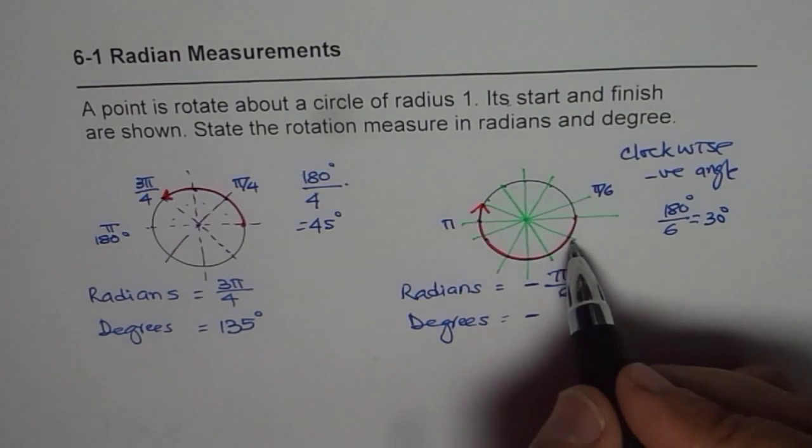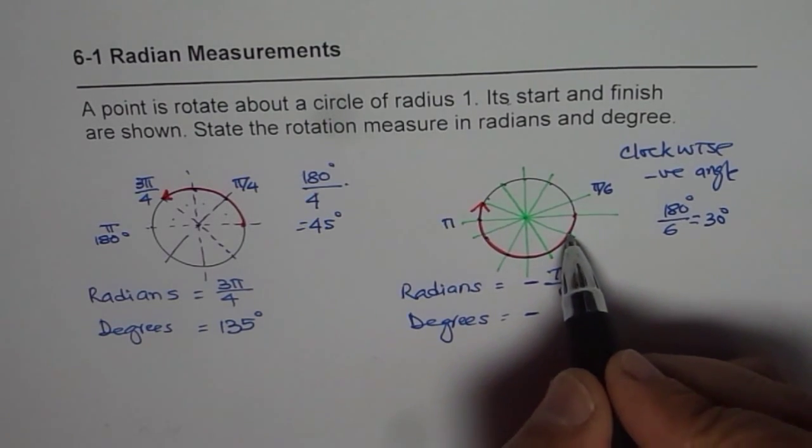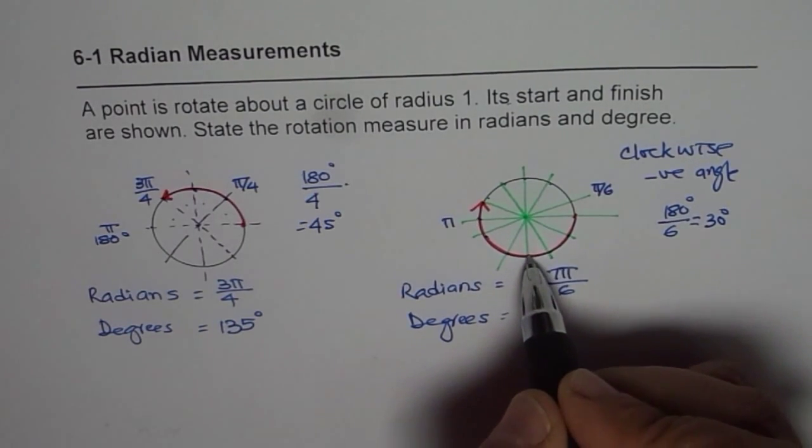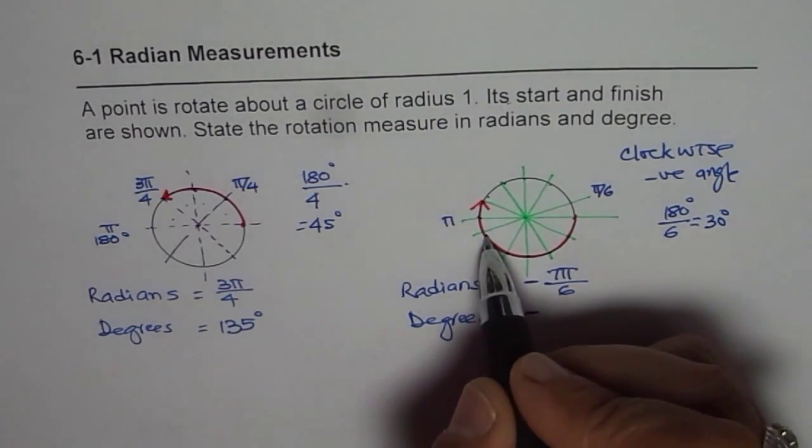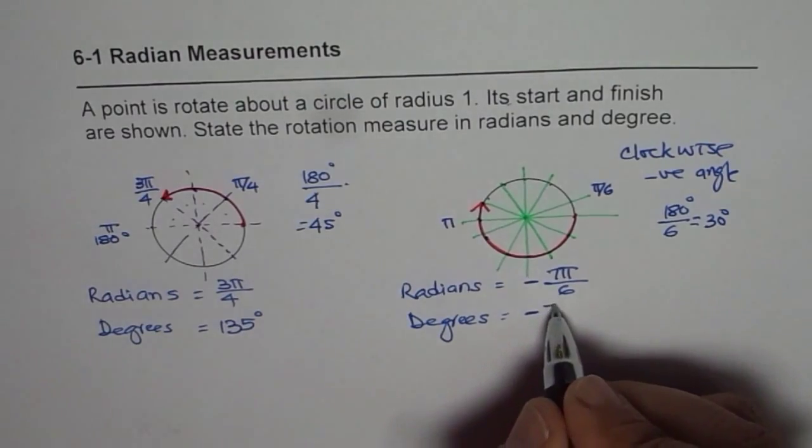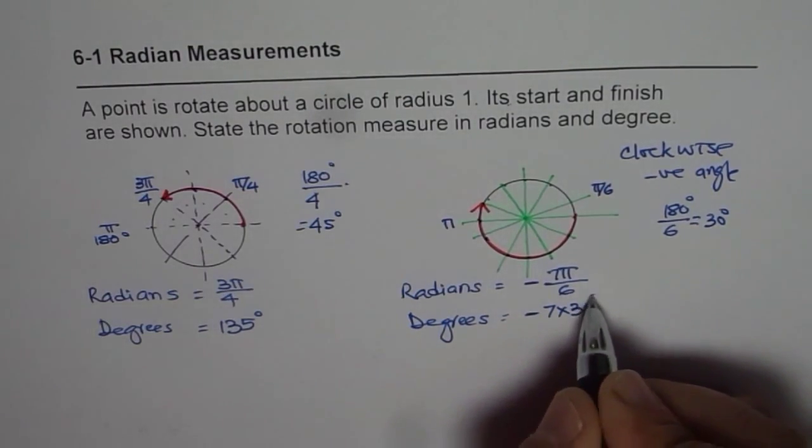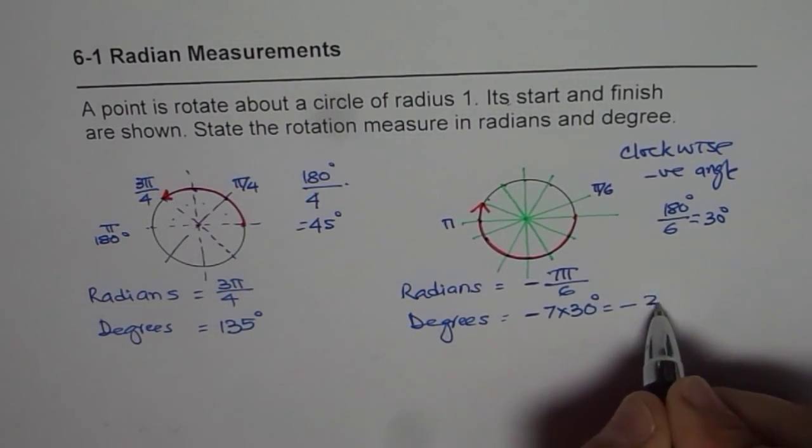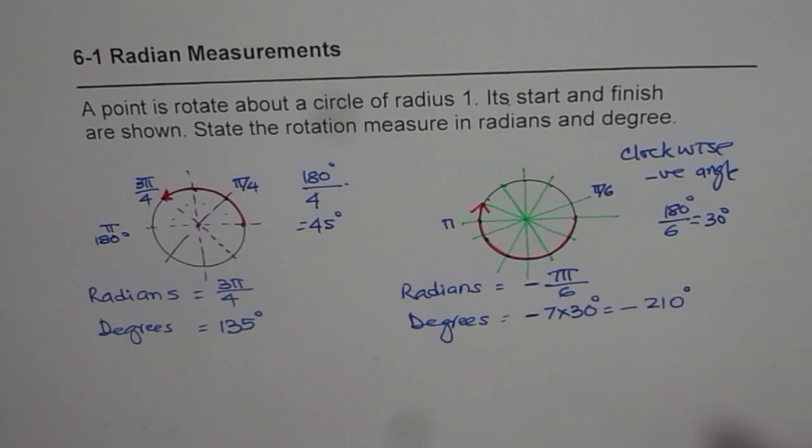Now how many 30 degrees do we have? 1 times 30, 2 times 30, 3 times 30, 4 times 30, 5 times 30, 6 times 30, 7 times 30. So it is 7 times 30 degrees, which is minus 210 degrees.